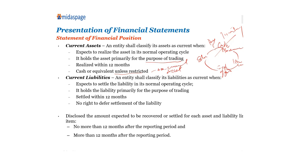The same thing applies to liabilities. An entity shall classify its liability as current when it is expected to settle the liability in each operating cycle, is held for trading, is due within 12 months, and there is no right to defer settlement of the liability. You must also disclose the amount expected to be recovered or settled for each asset and liability line item — both not more than 12 months and more than 12 months after the reporting period.